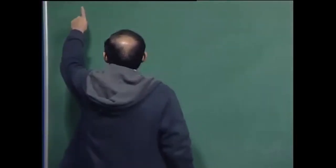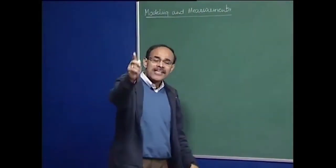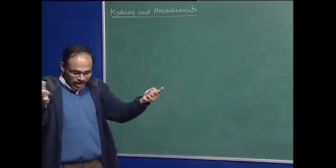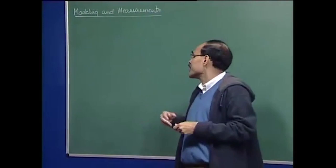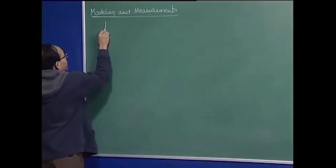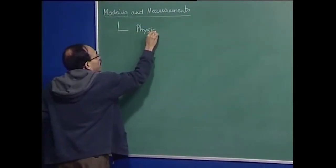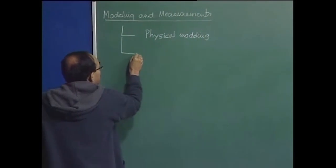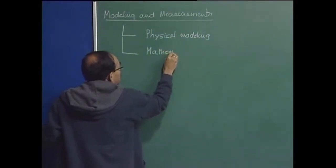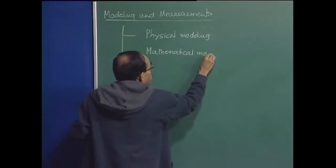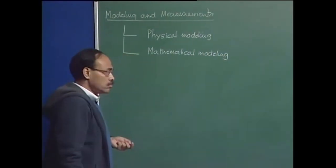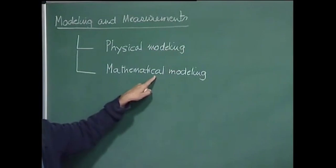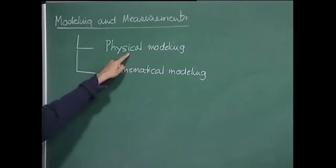Models basically means representing a process. We can represent a process either by a mathematical equation or expression, or by a physical setup itself — by changing the scale, the dimension, the fluid, and so on. We can have physical modeling and we can have mathematical modeling.